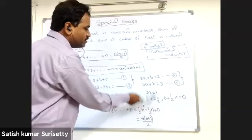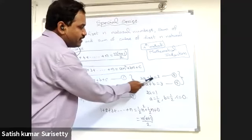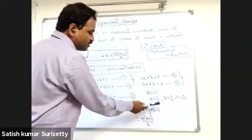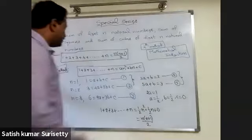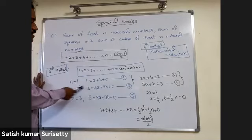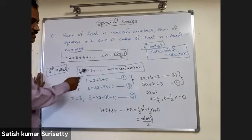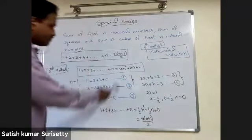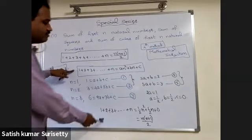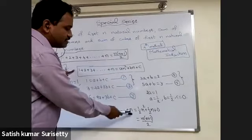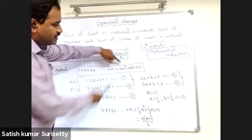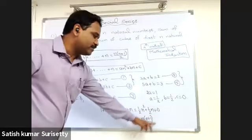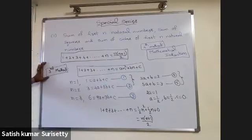Substitute a equal to 1 by 2 in the fourth equation to get b equal to 2 minus 3 by 2, which is 1 by 2. Substitute a and b into the first equation, a plus b plus c equal to 1, and you find c equal to 0. Substituting a, b, c back gives 1 plus 2 plus 3 and so on n equal to half n squared plus half n, that is n into n plus 1 by 2.